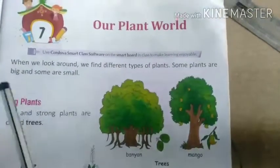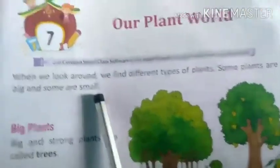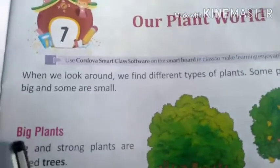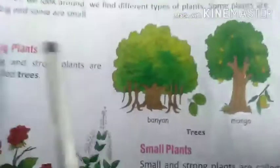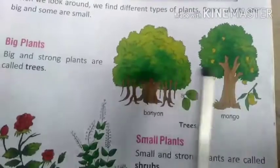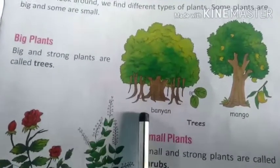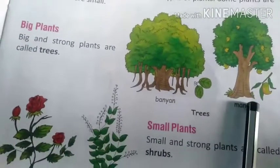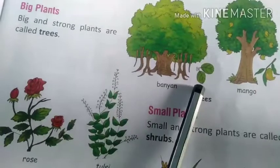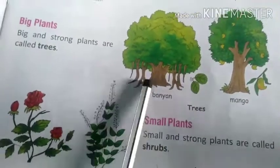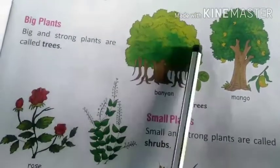Some plants are big and some plants are small. Which are big plants? You can see the pictures here — banyan tree, mango tree. These are big trees. They are also called big plants.